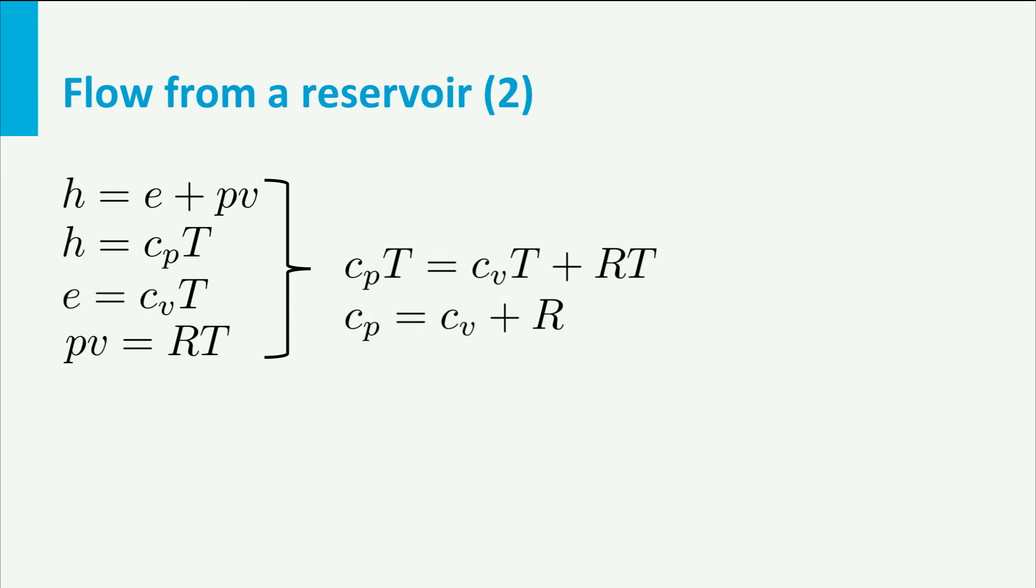Or, if you write it differently, CP minus CV is R. We also defined gamma is CP over CV. So, CV is CP divided by gamma. And if we combine these two, then it follows that CP is gamma R divided by gamma minus 1. So now we have an expression for CP in terms of gamma and R.